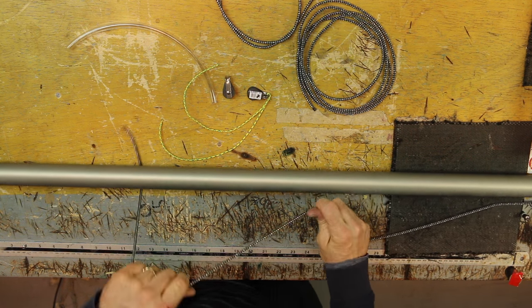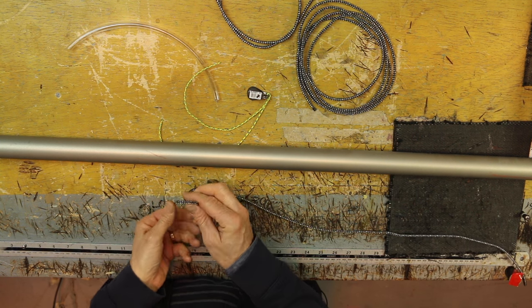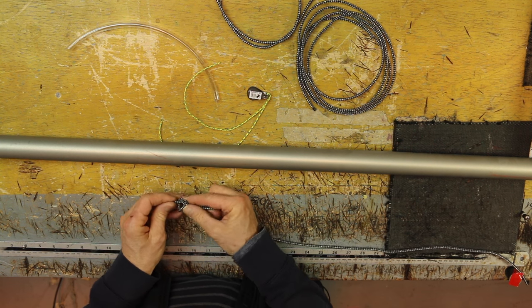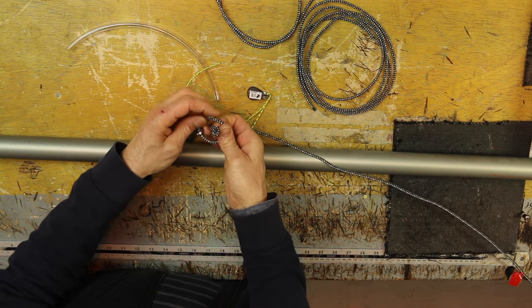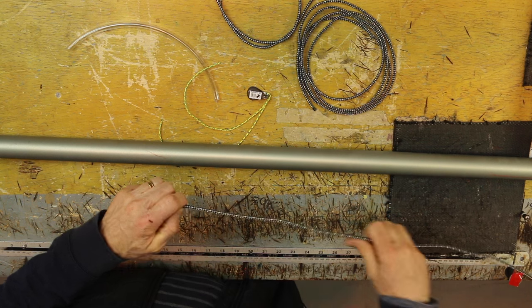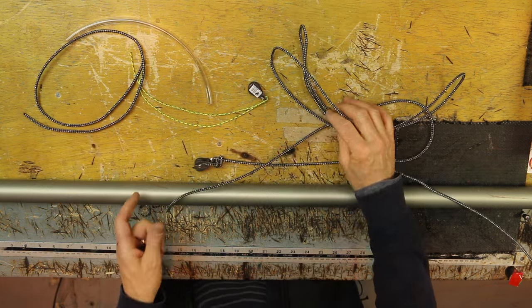So as we move along the boom, this control line is going to go onto a simple block. And I prefer to use a knot on a knot because it's very safe. It doesn't come undone easily, and you don't particularly want it to come undone.